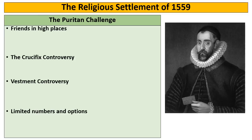In some ways the Puritan challenge is quite strong, and in some ways quite weak. On the screen I've put four factors of the Puritan challenge: friends in high places, the crucifix controversy, the vestment controversy, and their limited numbers and options. Pause the video and try and work out whether these elements of the Puritan challenge make them strong or weak.